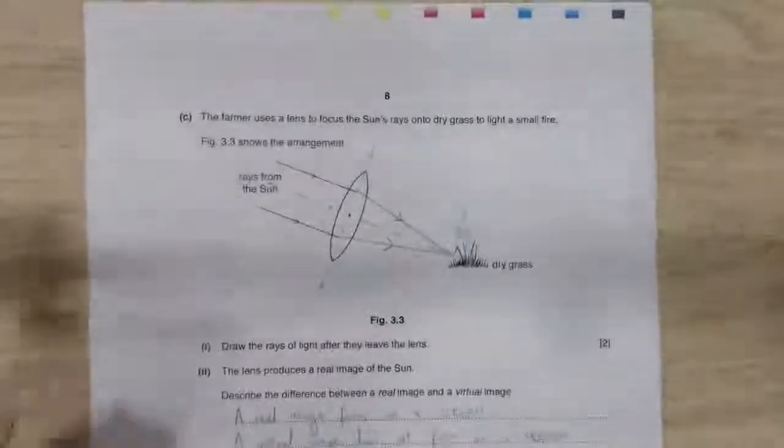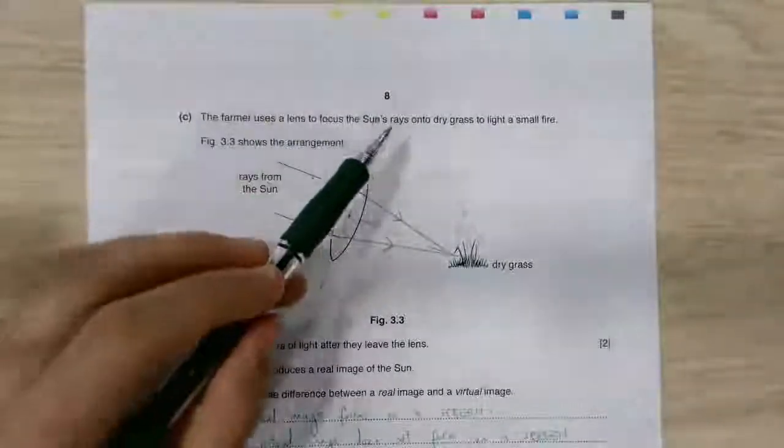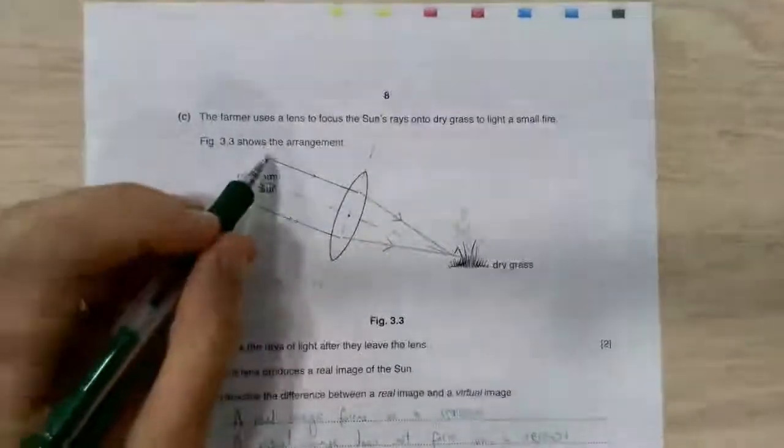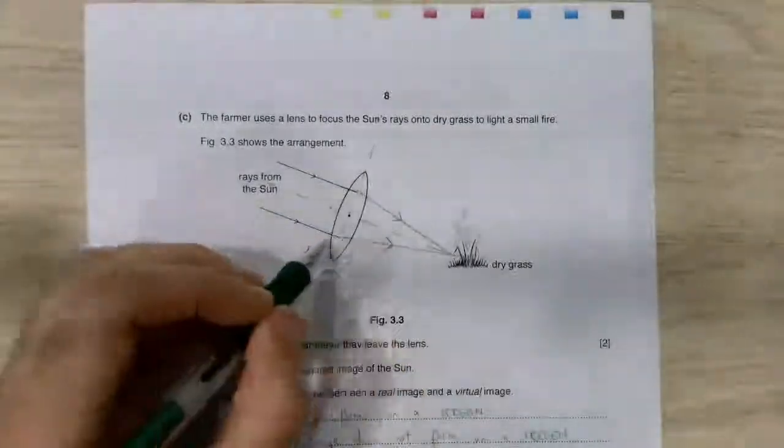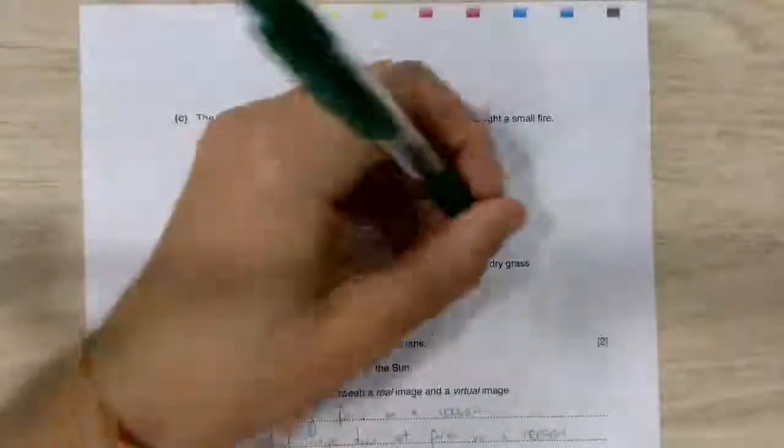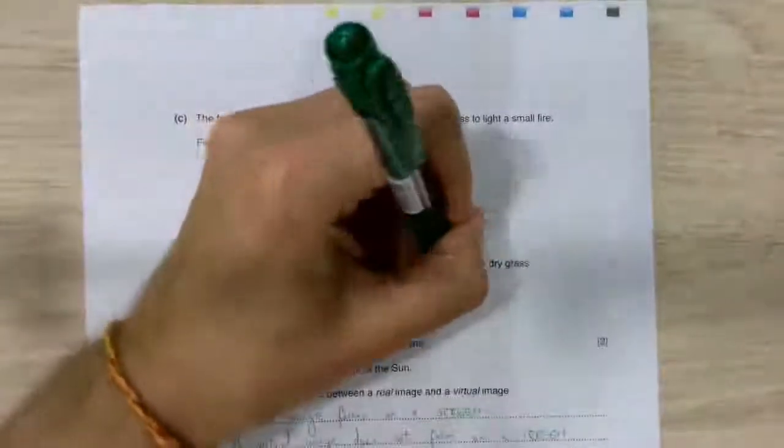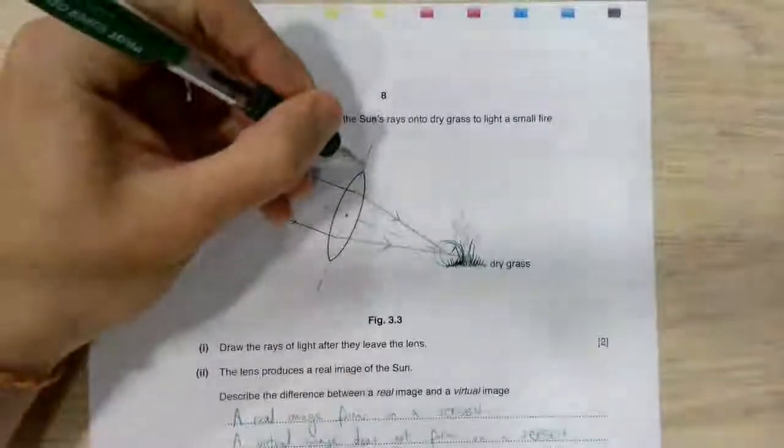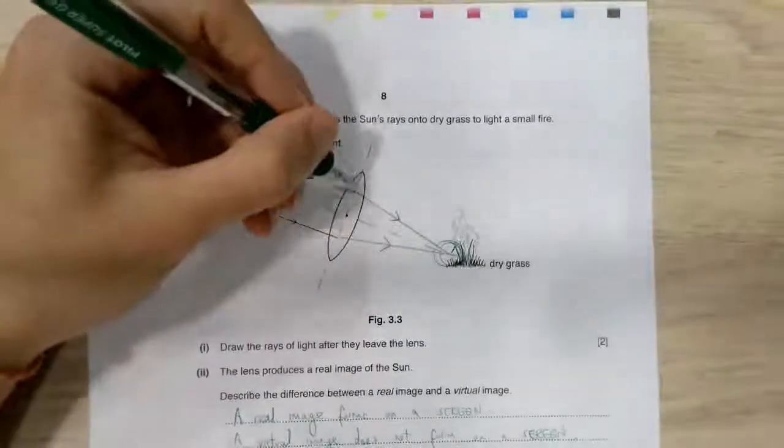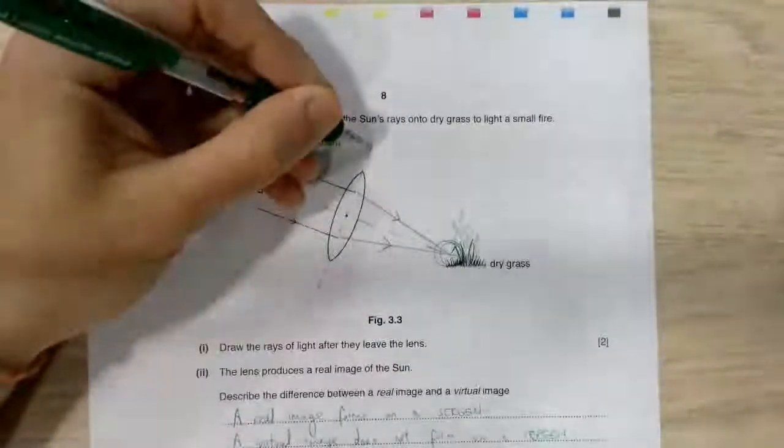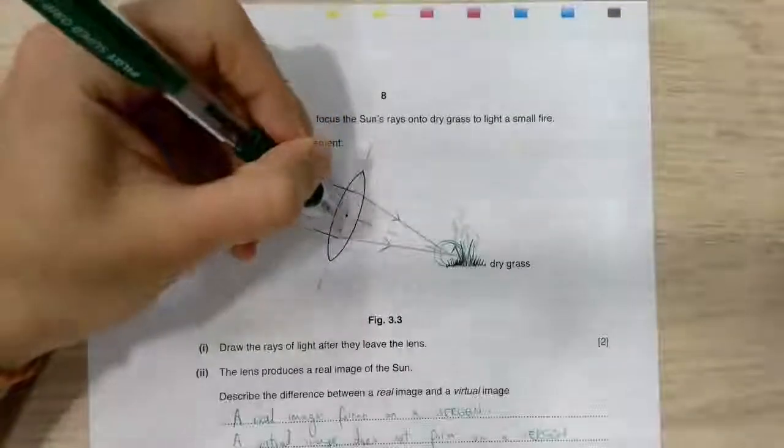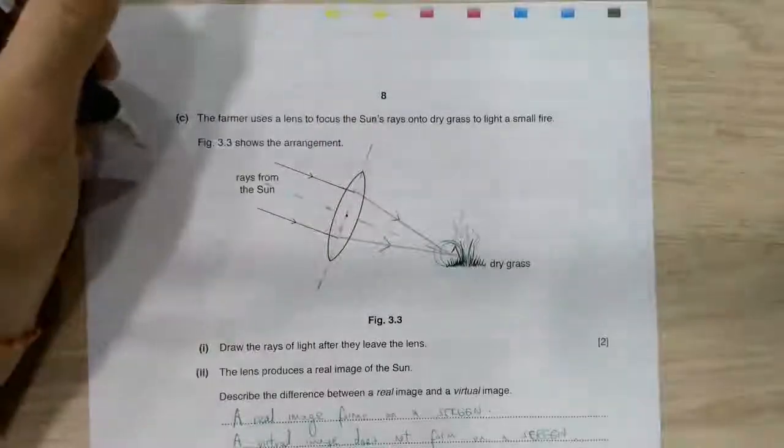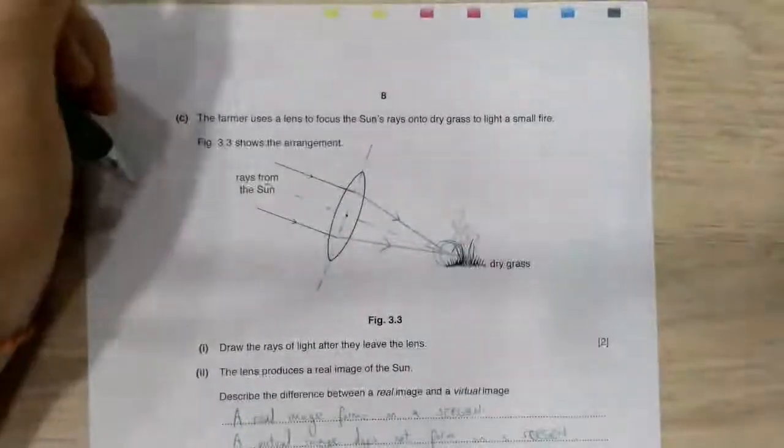Last bit. The farmer uses a lens to focus the sun's rays onto dry grass to light a small fire. We've got the light rays coming in and then bending. The key point here is they must focus on the dry grass, so somewhere around about here. What I like to do is, I'm not entirely clear on what CIE would do with this, but what you tend to do is you know that light will change its direction as it passes through a lens. But the question is when does it do it?